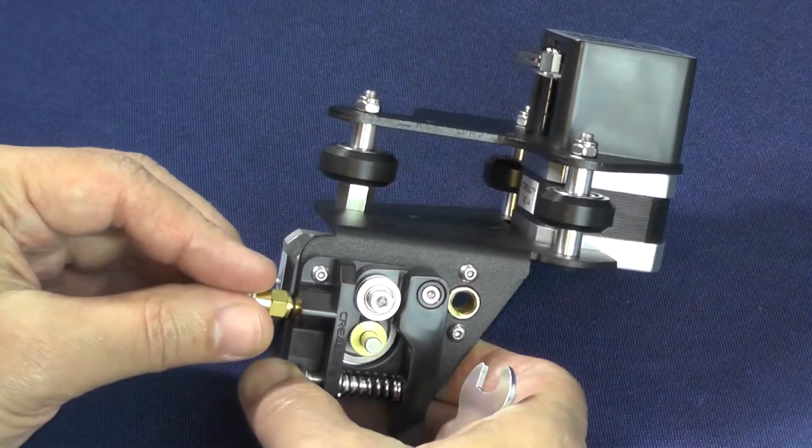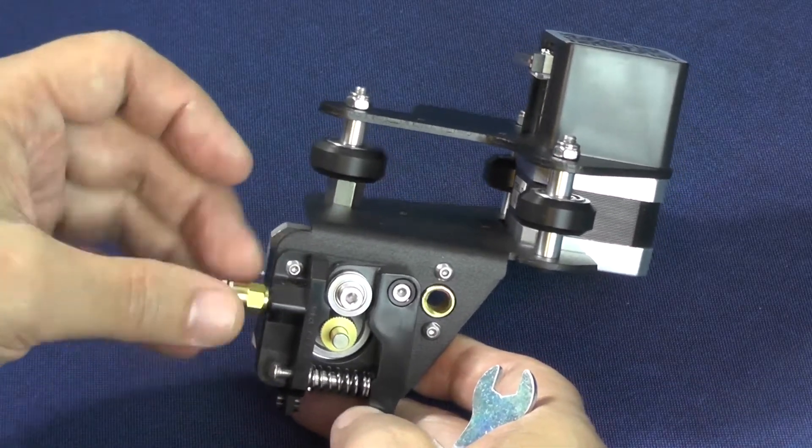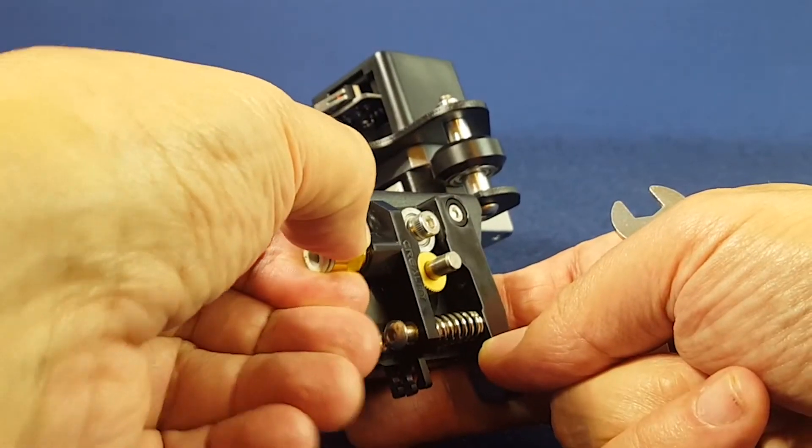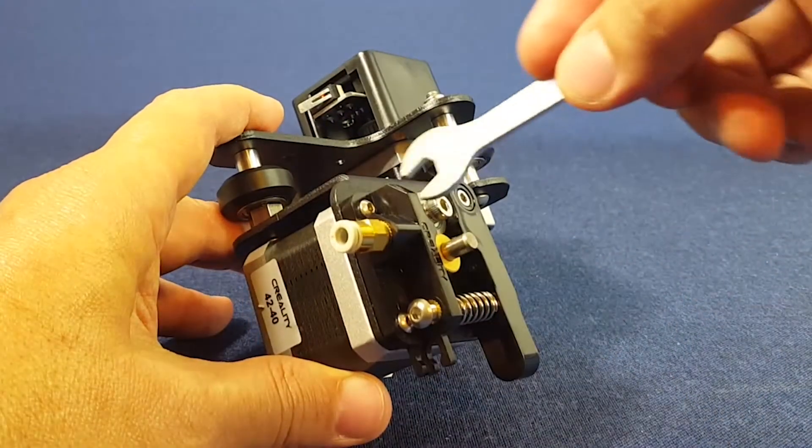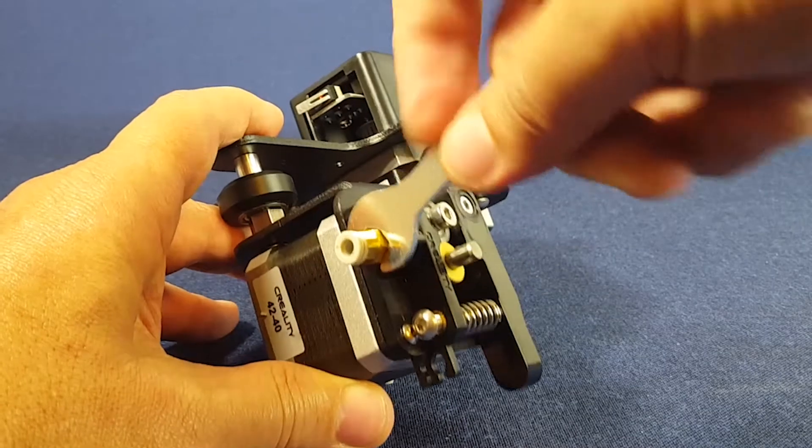You can begin screwing by hand, and you will need to use the smaller size of the wrench to tighten the coupler.